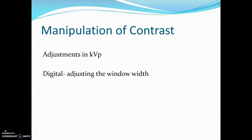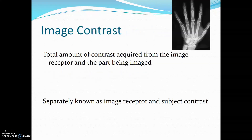Manipulation of contrast is usually made with adjustments in KVP or by adjusting the window width. Image contrast is the total amount of contrast that is acquired from the image receptor and the part being imaged. These are separately known as image receptor contrast and subject contrast.